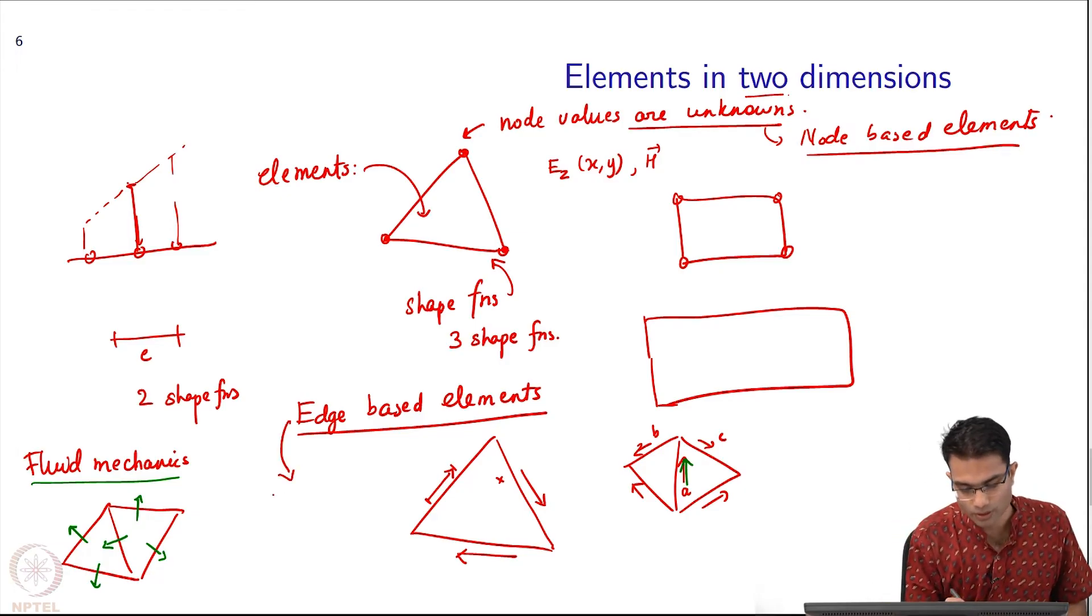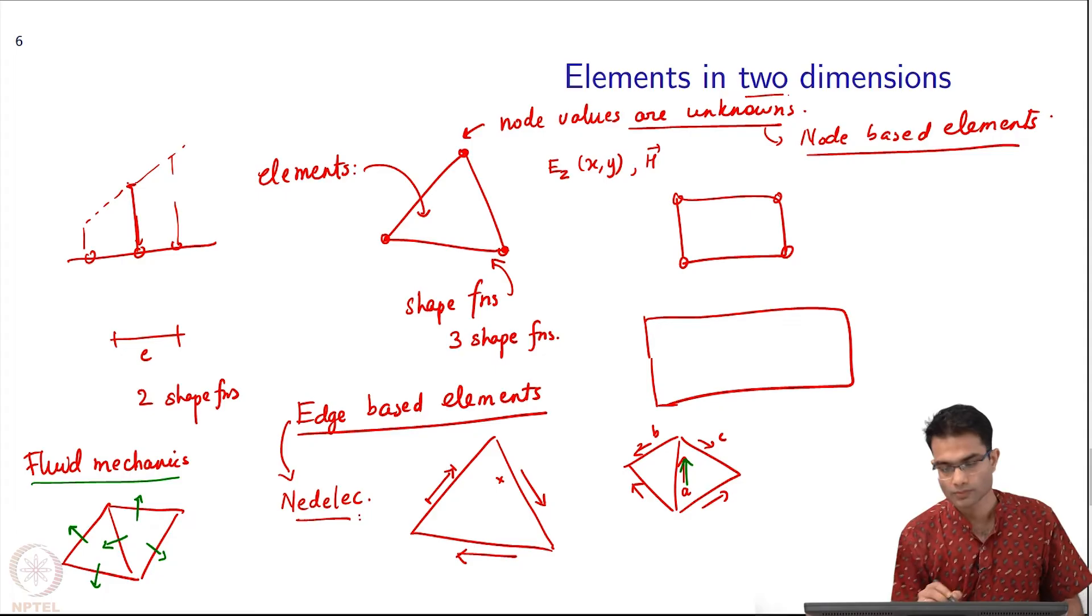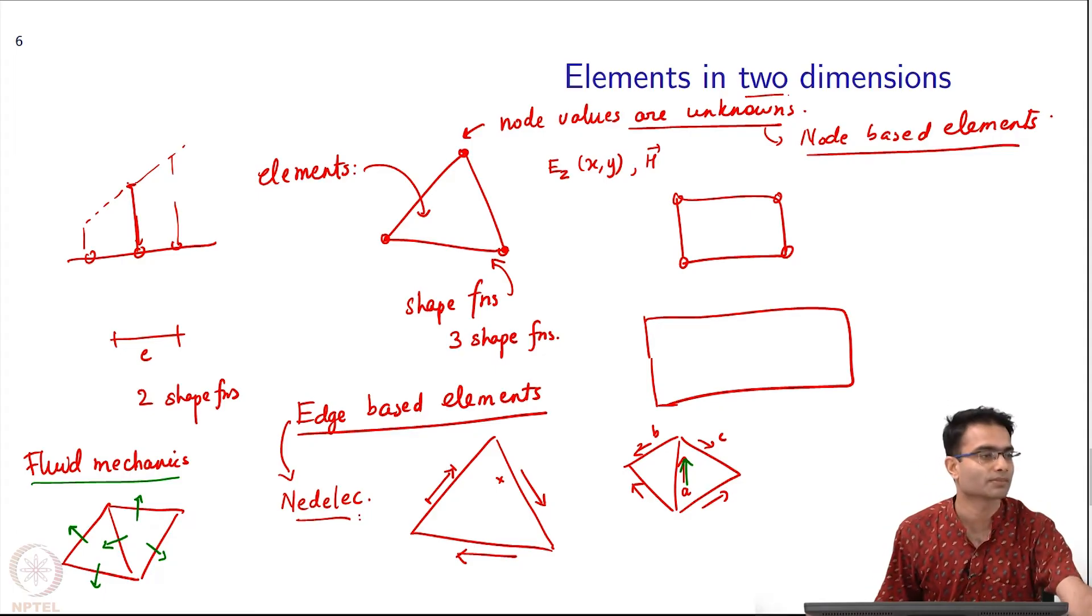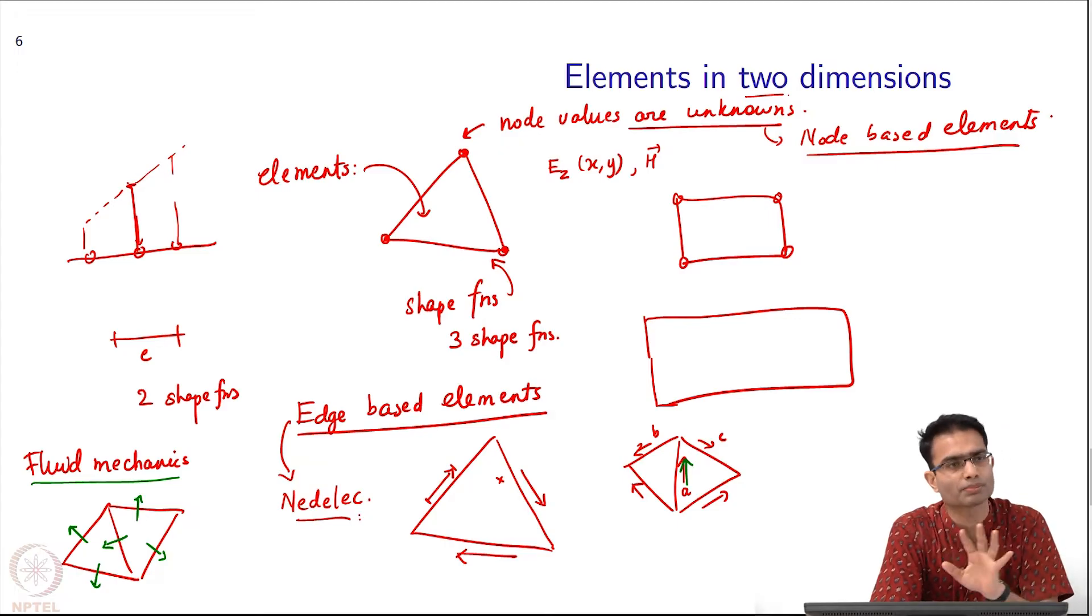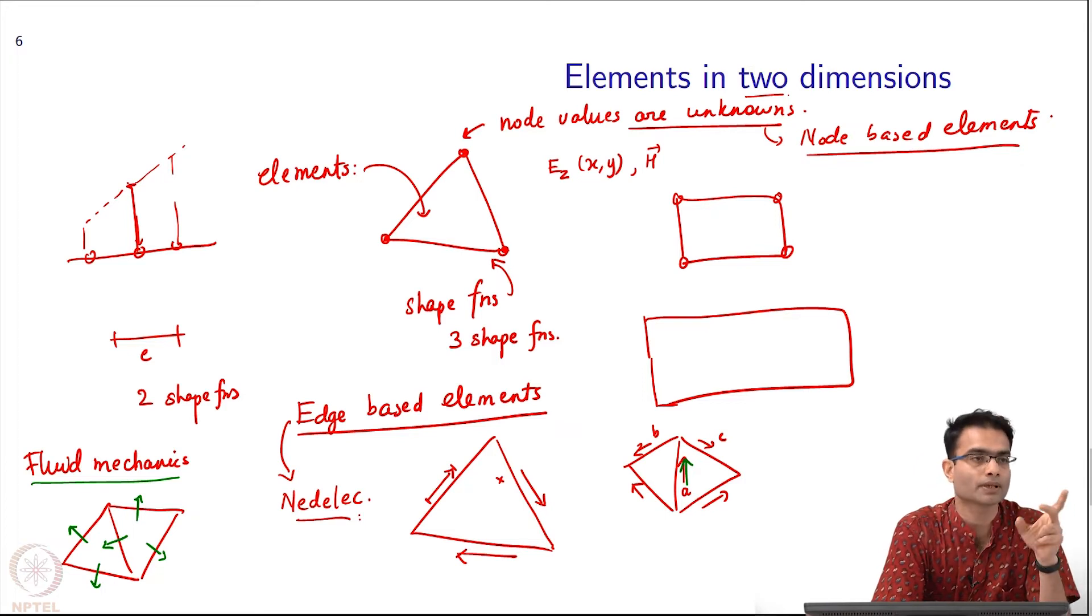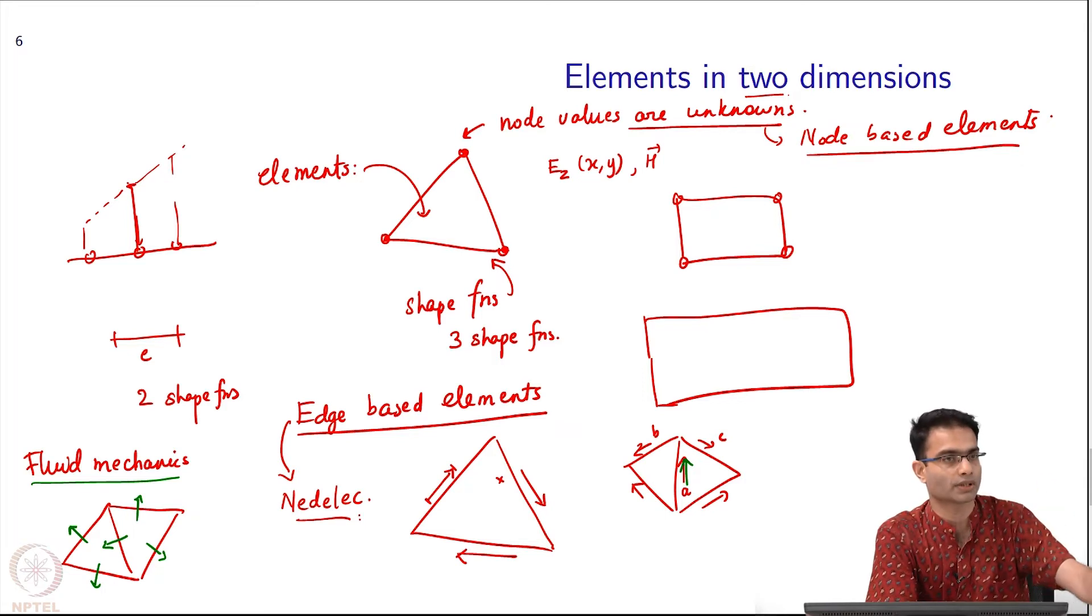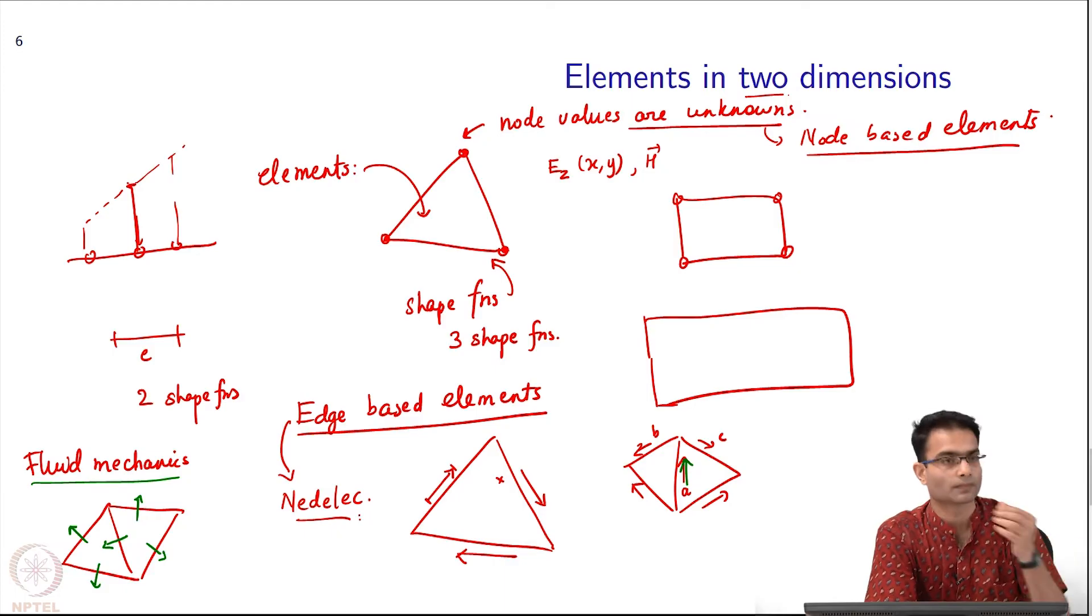These edge based elements are named after the scientist who discovered it - Nedelec. But first we will start with node based elements. The number of variables currently is 3 for the simplest node based or edge based element per element - there are 3 unknowns and those 3 are shared across.